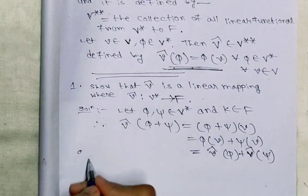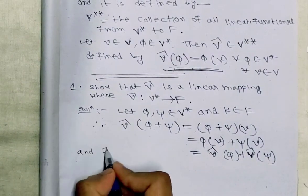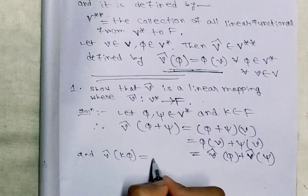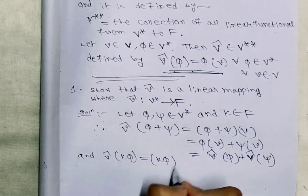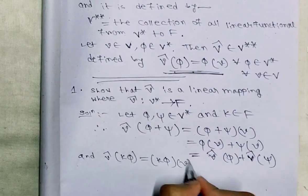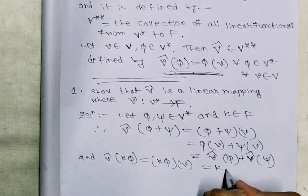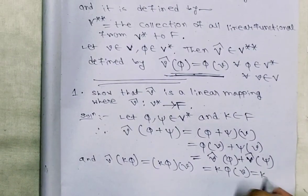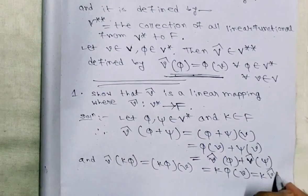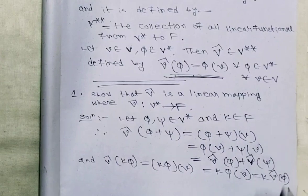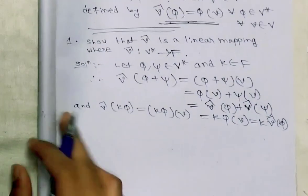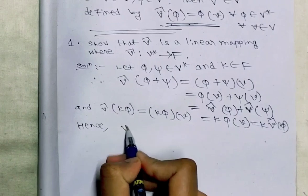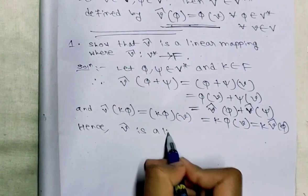And v̂(kφ) = kφ(v) = k·φ(v) = k·v̂(φ). Hence v̂ is a linear functional.